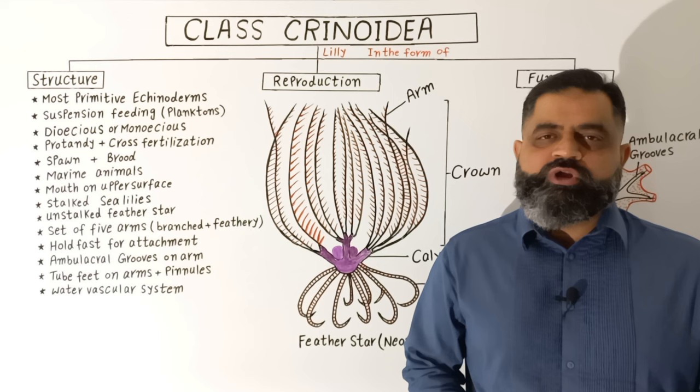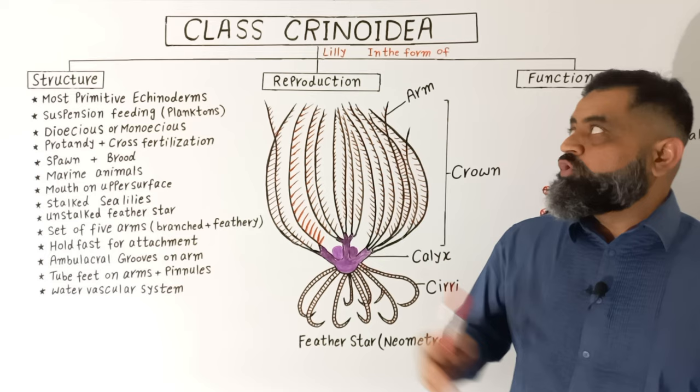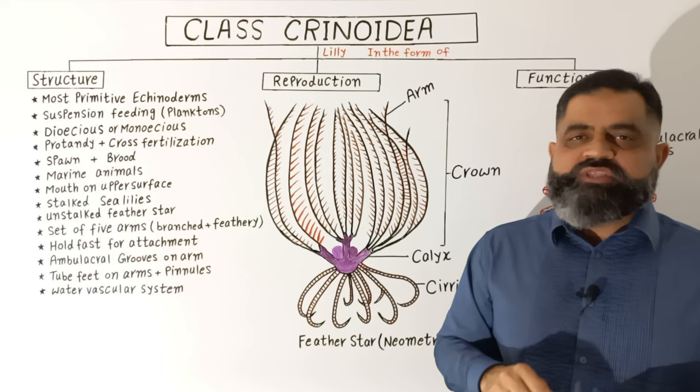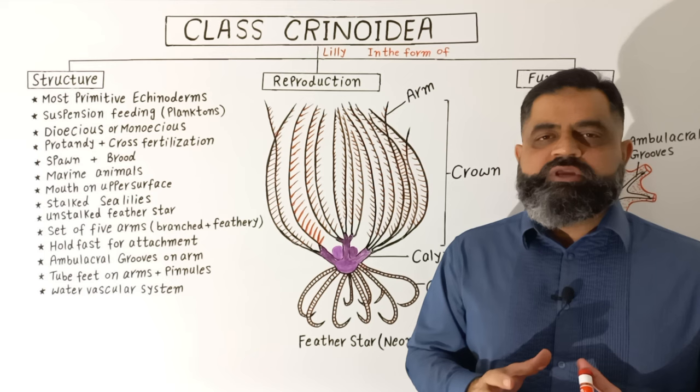Hello to all students. In this video lecture we are going to discuss Class Crinoidia. Class Crinoidia belongs to Phylum Echinodermata. If we look at the literal meaning, 'crin' means lily and 'oidia' means in the form of. So these animals look like water lilies, which is why they are known as Crinoidia. Let's discuss the structure.